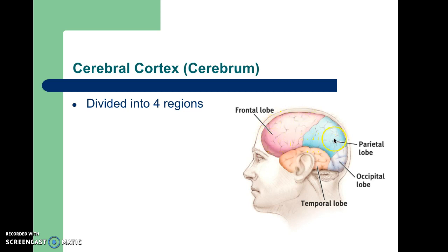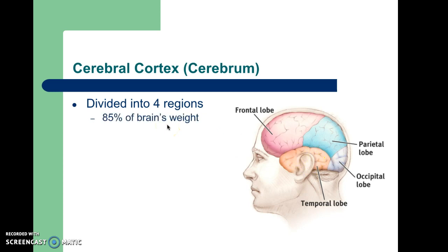The frontal lobe is probably the easiest to locate because it is in the front. We also have the parietal lobe, indicated in blue on this diagram, occupying the upper and back part of the cortex. The occipital lobe is at the very back, and the temporal lobe is located around where your ears sit — you have one on each side of your head.